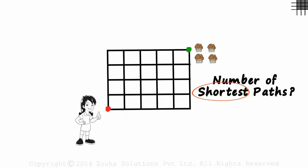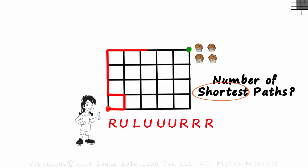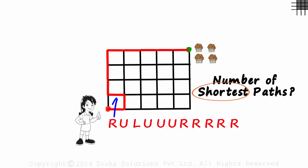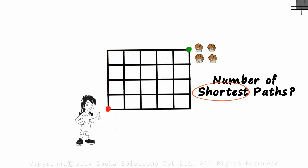But let's answer a question some of you would be wondering about: what is not a shortest path? The answer is simple — at any point, if you travel left or down, it will not be a shortest path. Say you go right, up, left, up, up, up, right, right, right, right, right — this will be eleven units, and it's clearly longer than nine, because we took a left. The same logic applies if we go down.